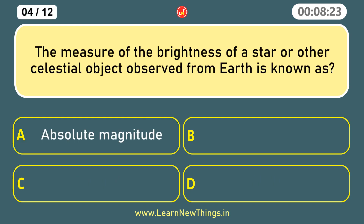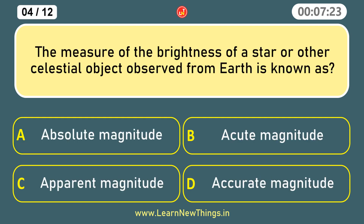The measure of the brightness of a star or other celestial object observed from Earth is known as? Apparent magnitude.